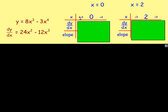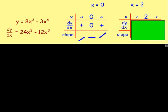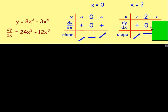For the nature table at x equals 0: pick negative 1 — substituting into dy/dx gives a positive value, so the graph slopes up. At 0 you get 0 gradient. Putting in 1 also gives a positive value, so the graph slopes up again. Up, zero, up — that is a rising point of inflection. For x equals 2: substituting 1 gives positive, at 2 you get 0, and substituting 3 gives a negative number. So that is a maximum turning point.